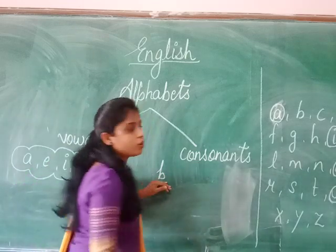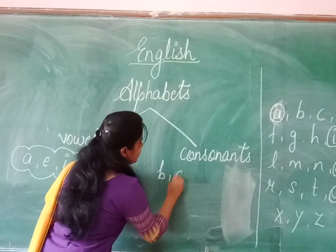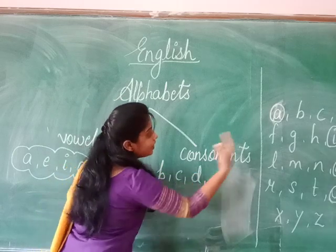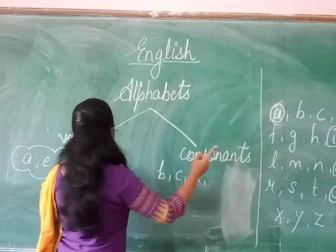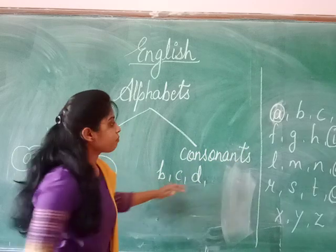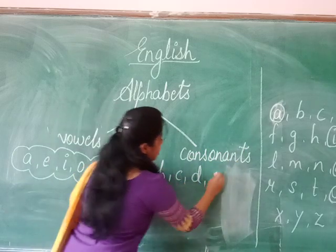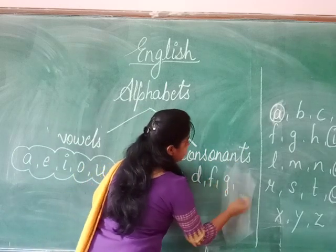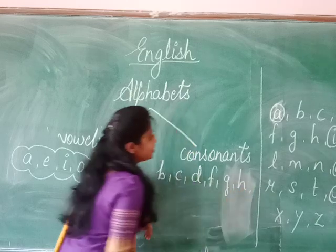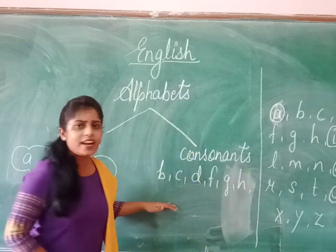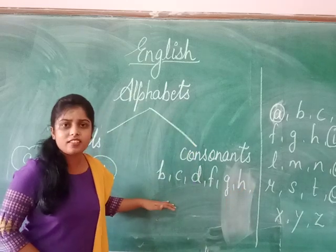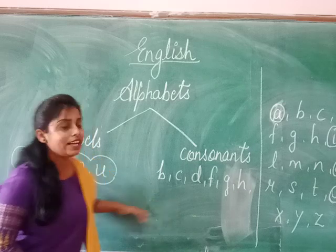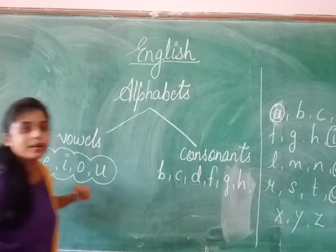So the first consonant is B, then C, then D. E is in the vowels. Then F, G, H. I is a vowel, so we skip I. After I, we have J.